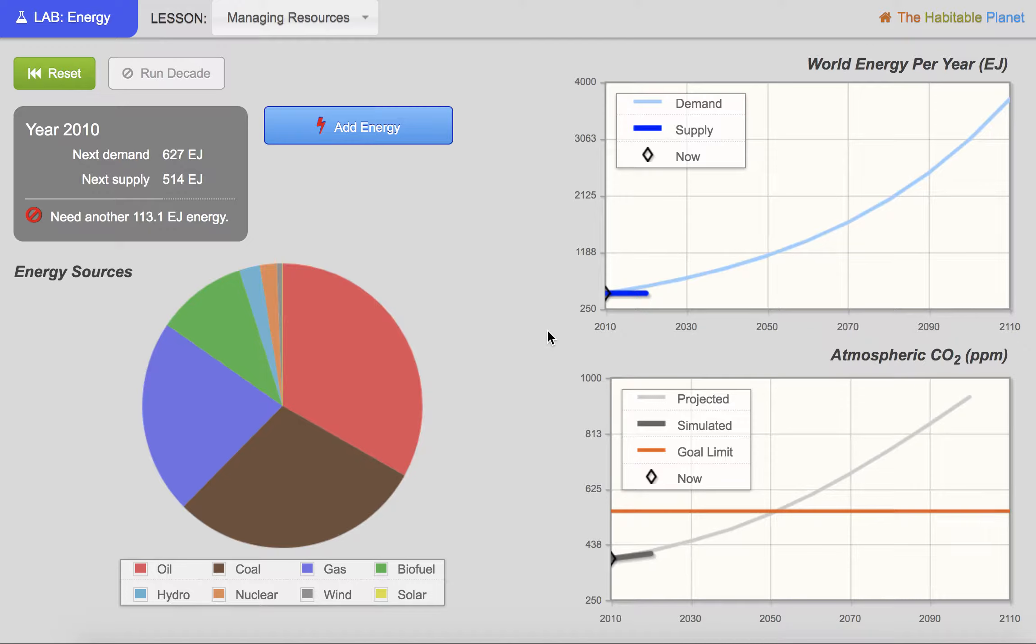The first thing that I want you to look at is the graphs. So there are two graphs. This first graph here is for the world's energy needs. And as you can see, the amount of energy that we need as a global society is increasing each decade.